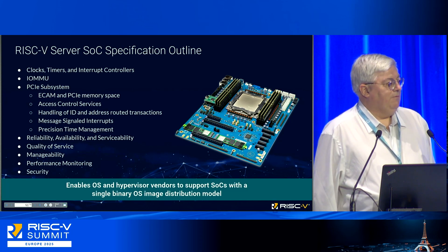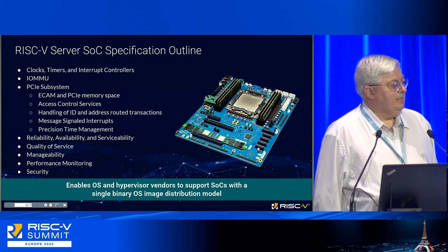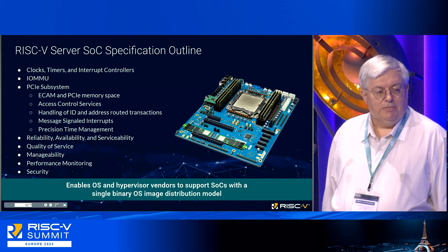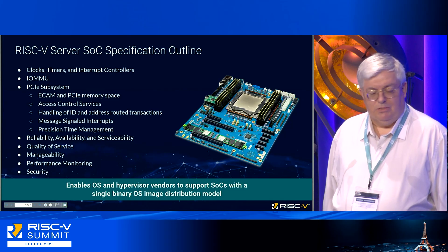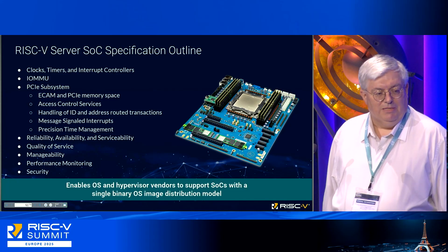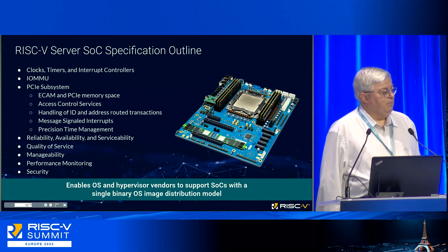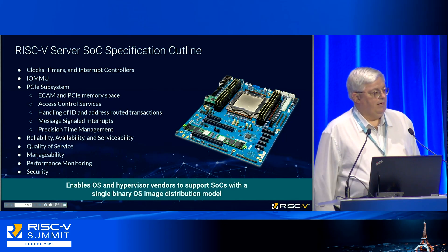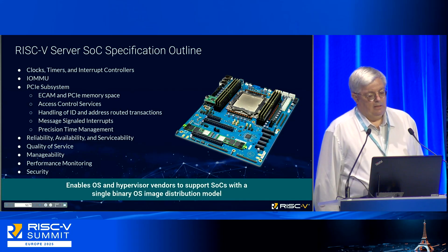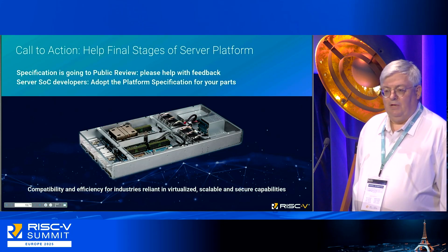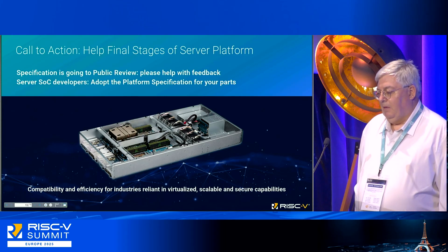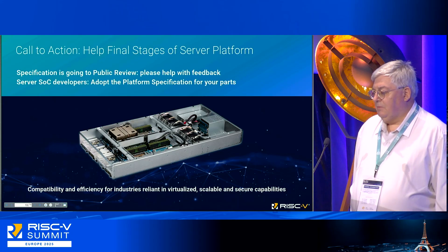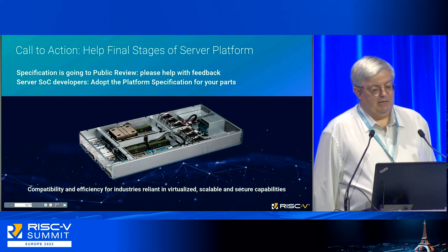It talks about using the Advanced Interrupt Controller so that all works out. There's a lot on how the PCI subsystem works — PCI is nice because you can discover what's out there using the configuration space, accessed through a memory-mapped address area called ECAM. But how do you know where in your address map the ECAM space is? That comes from the boot and runtime services providing that level of information. These specs all intertwine to provide the level of knowledge the OS needs. The call to action: help with the final stages of the server platform — it's going to public review in about a month. And if you're developing SoCs for the server space, make sure you adopt the platform specification.